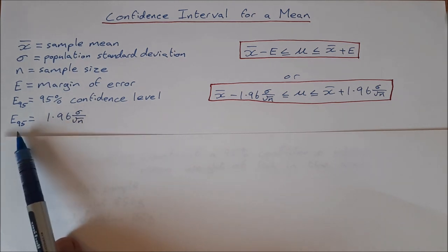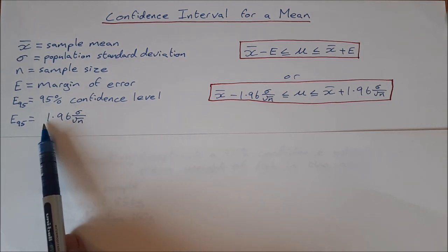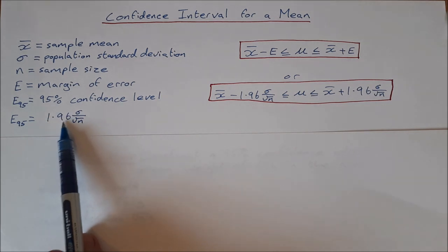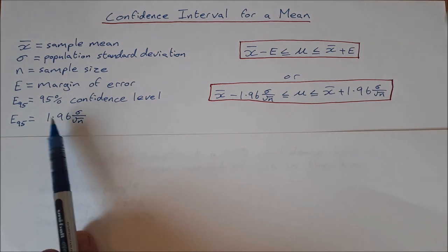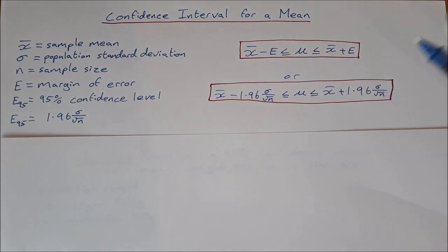For 99% there'll be a different number, for 90% there'll be a different number, and I'll show you in a different video how you actually get that number there if it's not given to you.